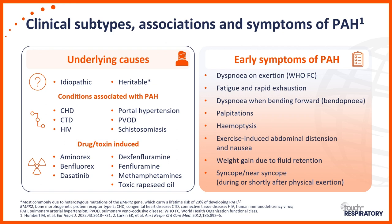The second most common population in registries and clinical trials are people who have connective tissue disease, especially the scleroderma spectrum. Other systemic diseases associated with a high risk of PAH include congenital heart disease, whether repaired or not, HIV infection, portal hypertension — especially in patients referred for liver transplant — pulmonary veno-occlusive disease, and schistosomiasis, which is probably the most common cause of PAH in the world.